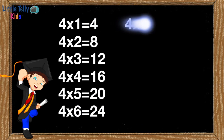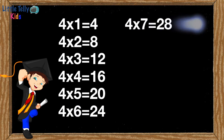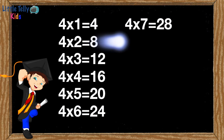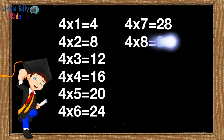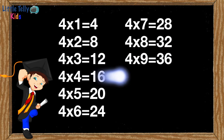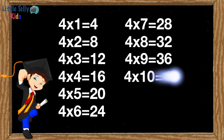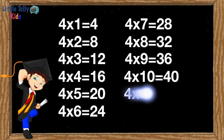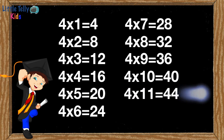Four sevens are twenty-eight. Four eights are thirty-two. Four nines are thirty-six. Four tens are forty. Four elevens are forty-four.